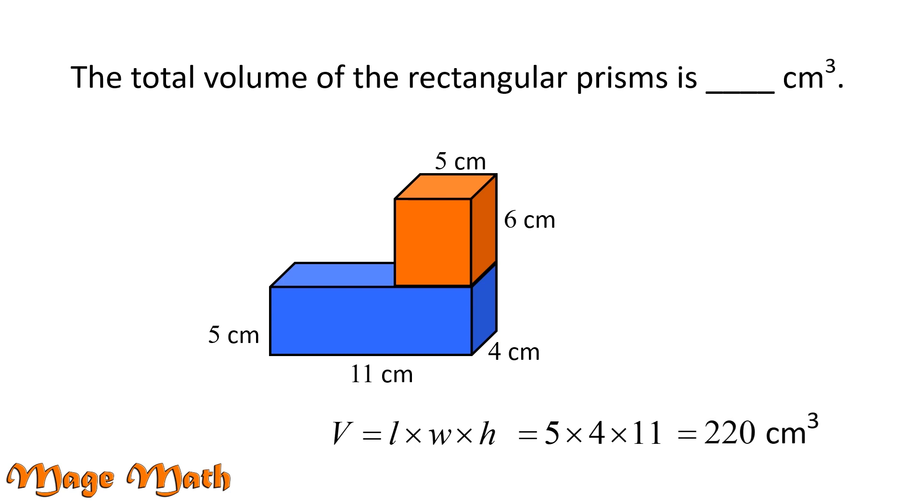And now we'll find the volume of the top orange prism. Notice the 4 centimeters width from below can be carried up to the top prism. This means we will substitute 5, 4, and 6 into our formula. 5 times 4 times 6 equals 120 centimeters cubed. Nice job!